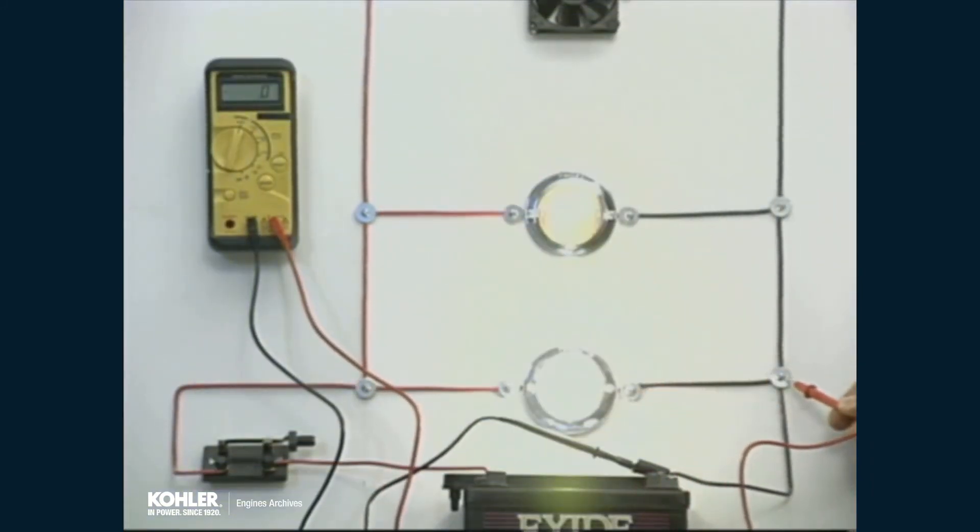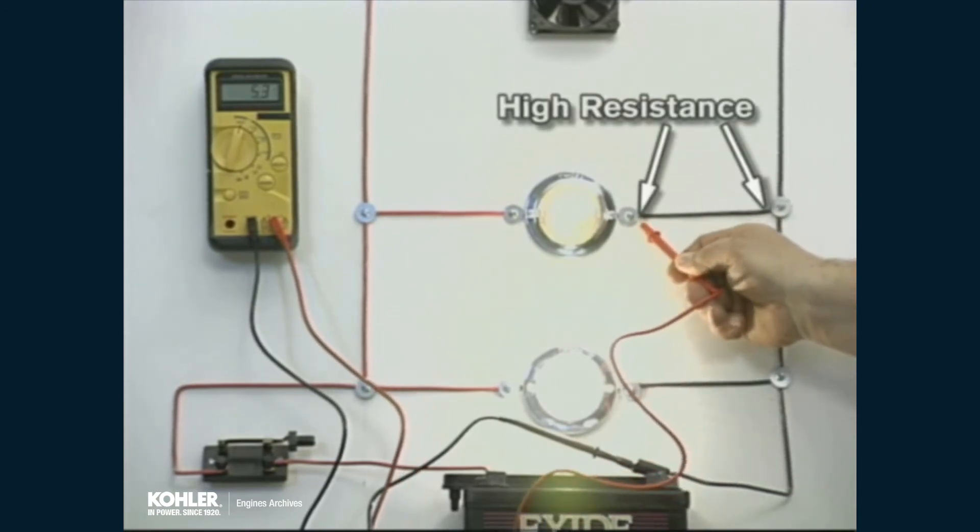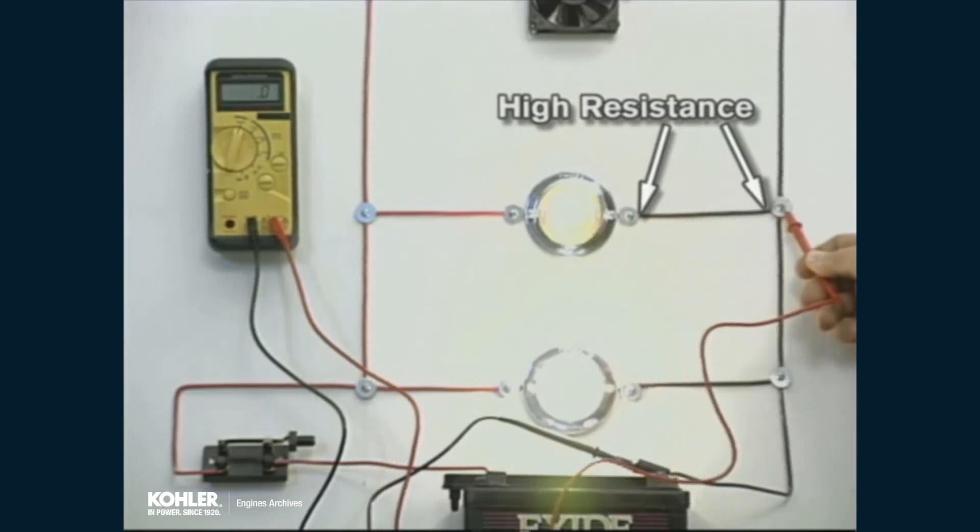Voltage readings taken after the circuit passes through the load should be zero, since this is the ground side of the circuit. If voltage is present, a significant resistance exists in the ground circuit back to the battery.